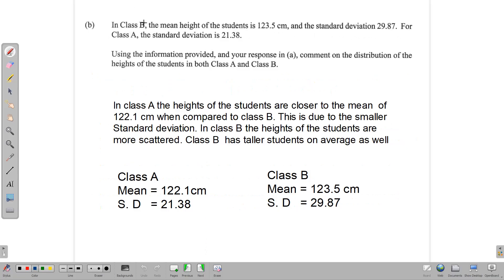Answering the question now. In class B, the mean height of the students is 123.5 centimeters. And the standard deviation is 29.87. It's written here for convenience. And for class A, same information. We worked out the mean and we're given the standard deviation of 21.38. Now we are asked to comment using the information provided, comment on the distribution. And the distribution has to do with how the scores are spread out, how the scores cluster around the mean. Are they far? Are they near? And so not sure exactly how much you're expected to write.